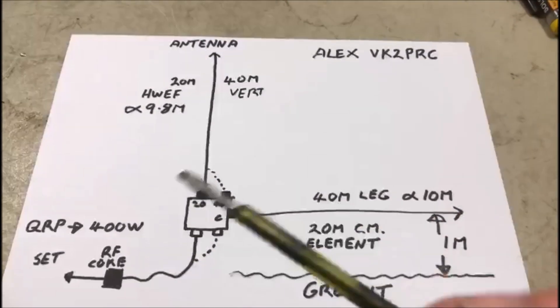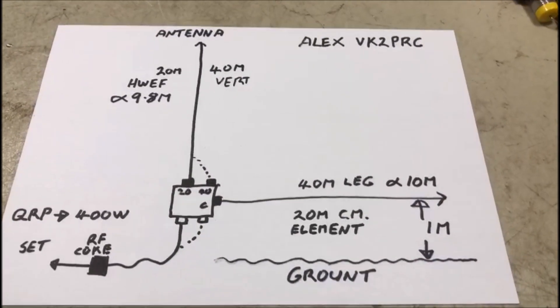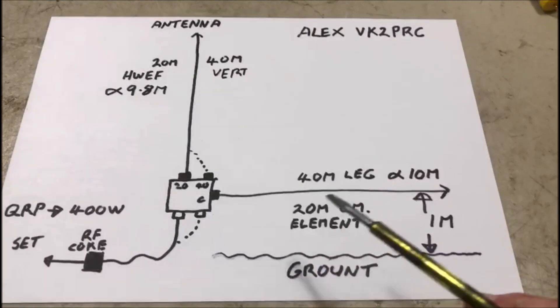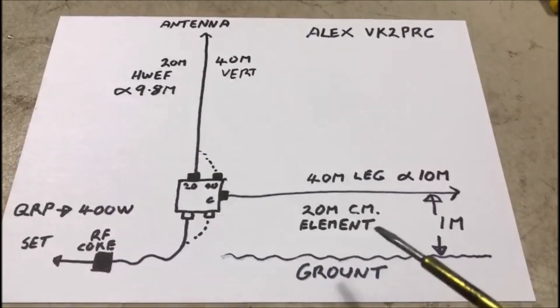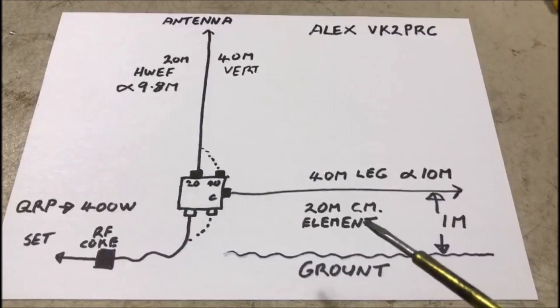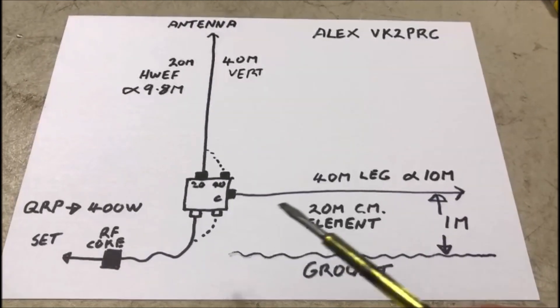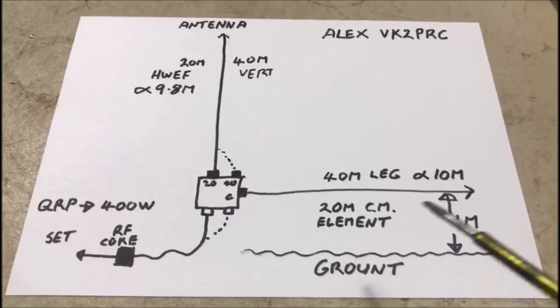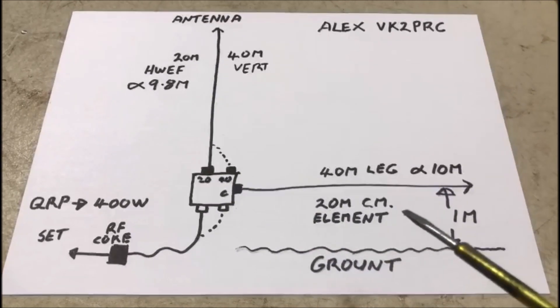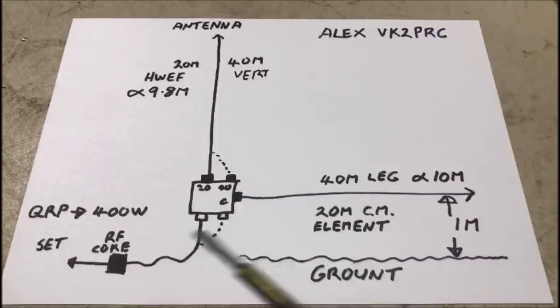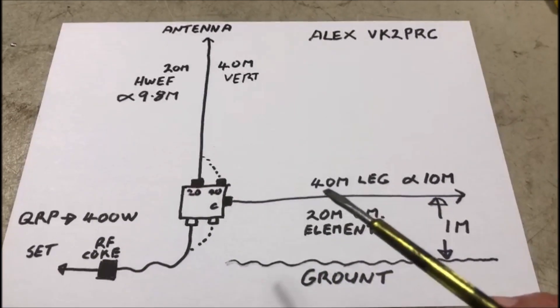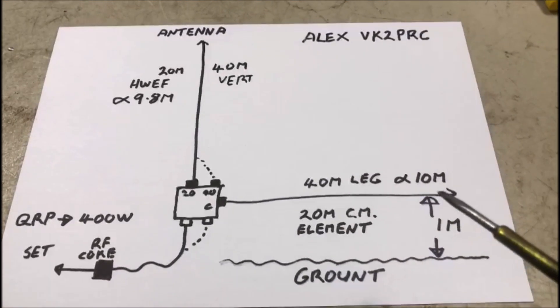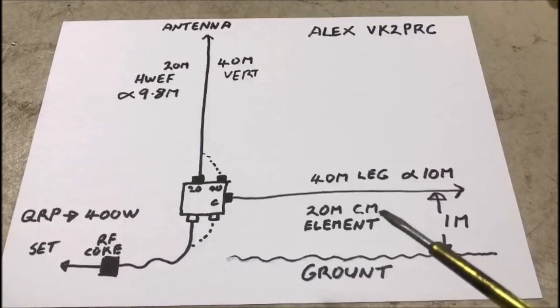But these types of antennas develop quite a lot of common mode currents and they need to be dispersed, so we use a counterpoise or an element to take care of the radiated common mode currents. These particular elements are not very important in their specific length, as long as they're long enough. If you're using QRP it doesn't have to be very long, maybe a meter, but if you're using 400 watts you might find 10 meters is required to get rid of the common mode currents.